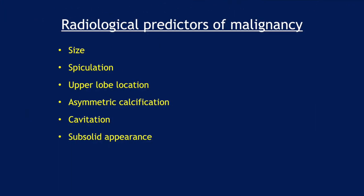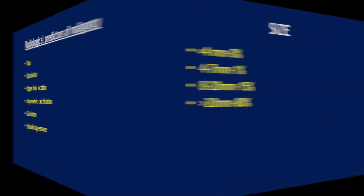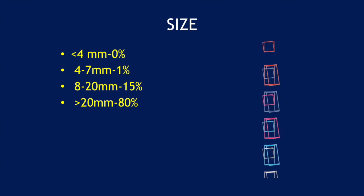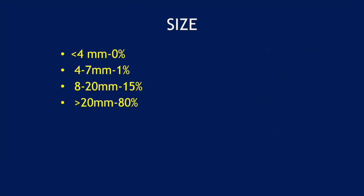Now let us look at the radiological predictors of malignancy. Size — the larger the size, the more the chances of it being malignant. A nodule with spiculated margin or lobulated margin. Upper lobe location. Asymmetric calcification. Cavitation and subsolid appearance. Regarding size: anything less than 4 mm has a 0% chance; 4 to 7 mm, 1%; 8 to 20 mm, 15%; and anything more than 20 mm has an 80% chance of malignancy.